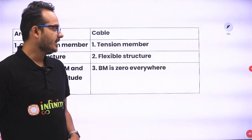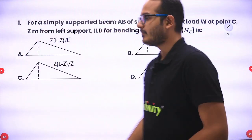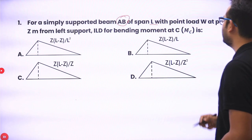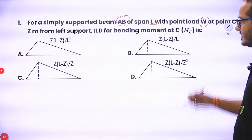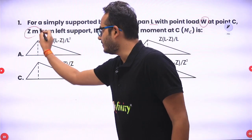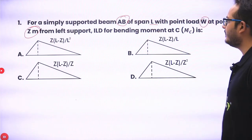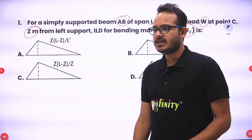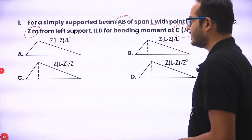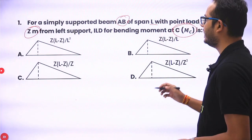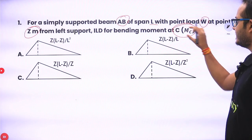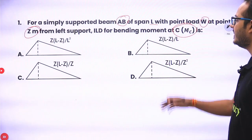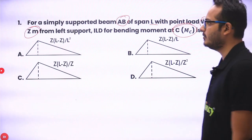First question: for a simply supported beam AB of span L with point load W at point C, Z meters from the left support, we need to find the ILD for bending moment at C. We have a simply supported beam and we have to draw the ILD for bending moment at C, which is Z meters from the left support.